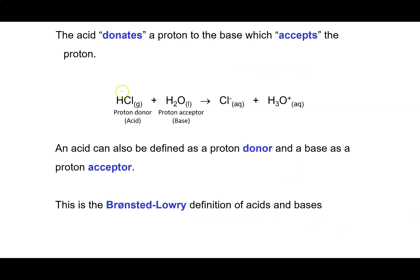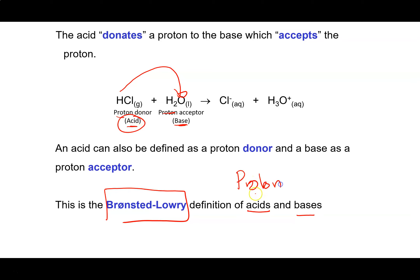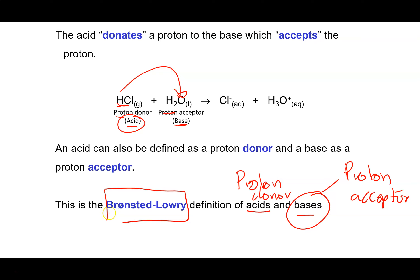In the scenario where a proton moves from the acid to the water molecule, we can think of this as a proton transfer reaction. The proton donor is the acid, and the proton acceptor is the base. This leads us to the Bronsted-Lowry definitions: an acid is a proton donor, like HCl in this example, and a base is a proton acceptor, which in this case is water. The proton acceptor doesn't have to be water, so acids can exist in the presence of any proton acceptor. This is an extension of the Arrhenius definition.